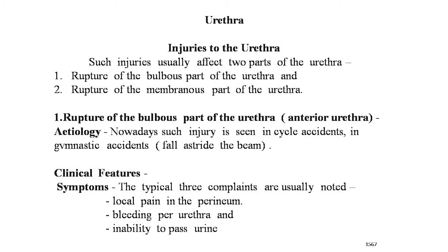Rupture of the bulbous urethra, the anterior urethra, is usually caused by a straddle type of fall — that is, a fall astride projecting objects. Nowadays such injury is seen in cycle accidents, gymnastic accidents, falls astride on a beam, and while walking over a loose manhole cover. This is essentially a direct injury to the perineal region between the scrotum anteriorly and anus posteriorly.